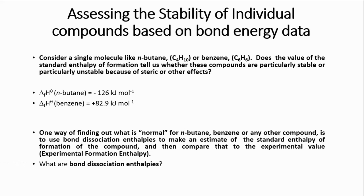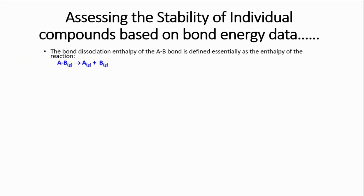What are bond dissociation enthalpies? Bond dissociation enthalpy, for a hypothetical molecule AB, is defined as the enthalpy of the reaction where AB is broken into its constituent atoms. If you look at that reaction, you realize it is basically the enthalpy change when one mole of a certain type of bond is broken. The compound must be in the gaseous phase for this to apply.